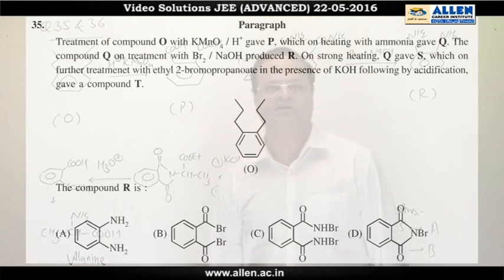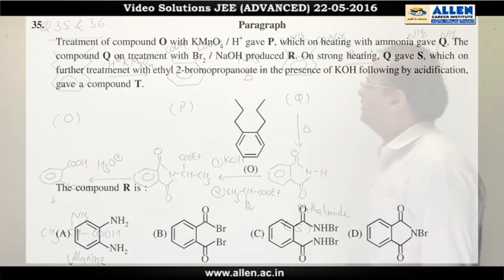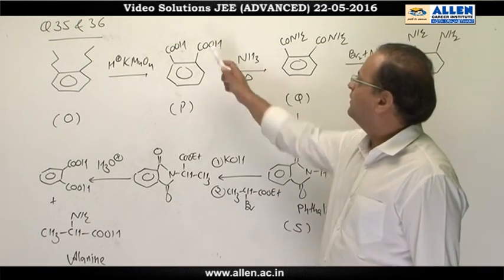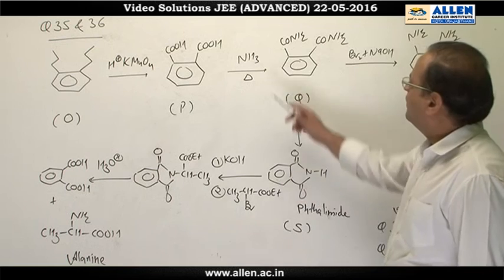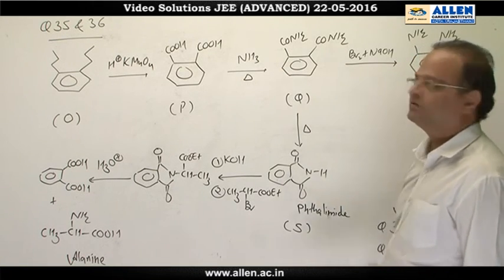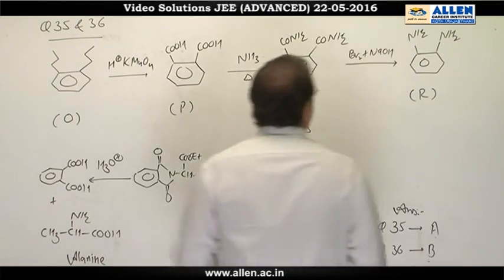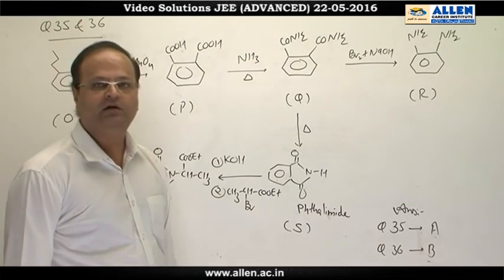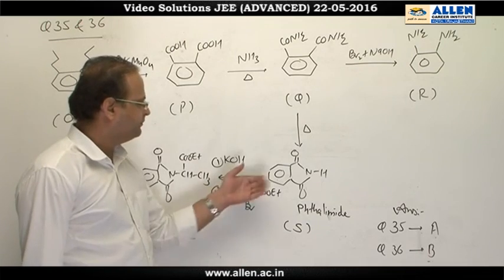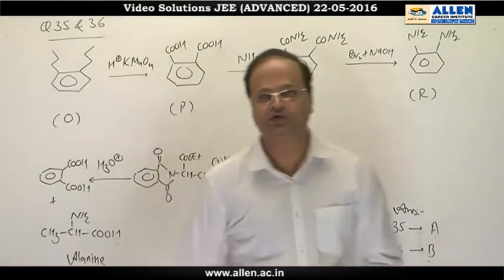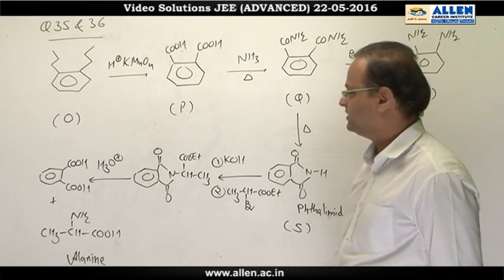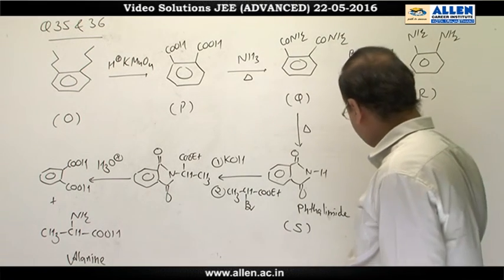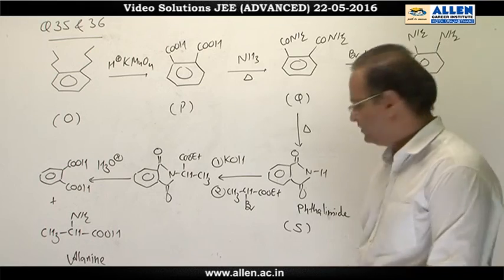Questions 35 and 36 are related to a paragraph about compound O, which is oxidized by H⁺/KMnO₄ into a dicarboxylic acid — thalic acid. On treatment with ammonia, thalic acid produces a diamide. The diamide undergoes Hofmann's degradation to produce orthophenylenediamine. The diamide on heating produces thalimide, which undergoes Gabriel's thalimide synthesis; on hydrolysis it produces alanine. Answer of 35 is A and answer of 36 is B.